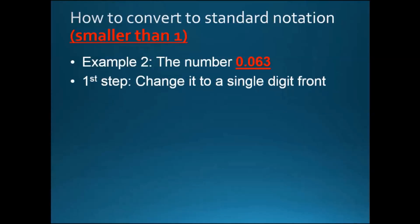The first step would be to change it to a single digit front. So 0.063 will be 6.3. This is single digit front and all the rest should be after the decimal. Then it will be times 0.01.